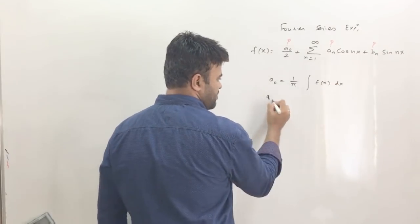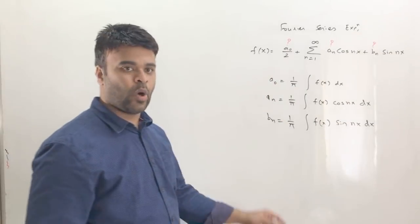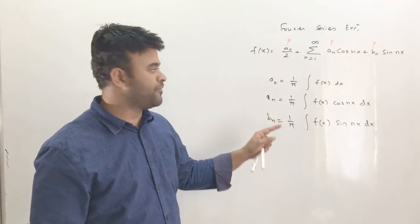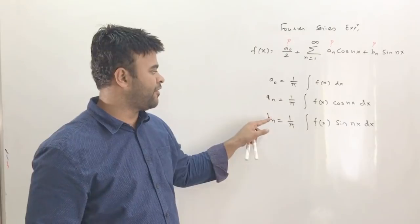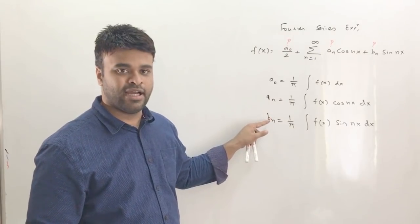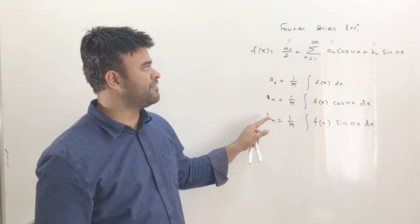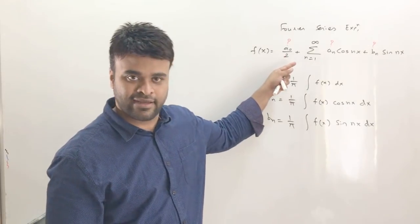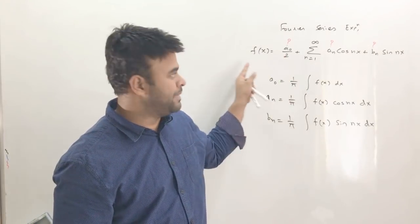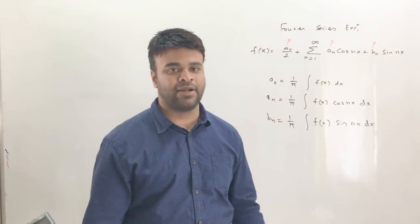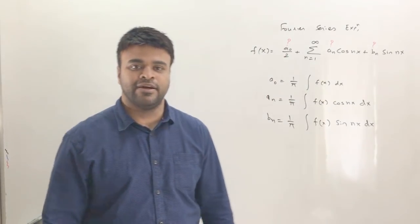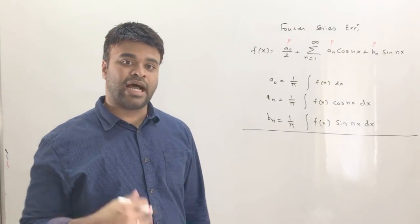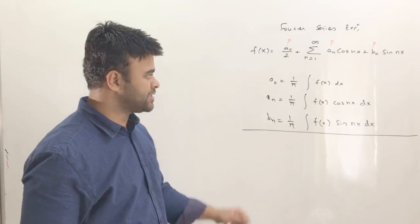There are standard formulas for a₀, aₙ, and bₙ. Use those formulas to find the values, then substitute back into the main expression. That is exactly what you should be doing to solve a Fourier series problem.